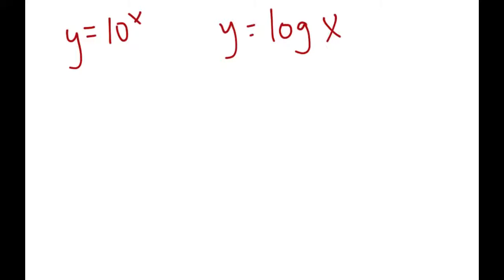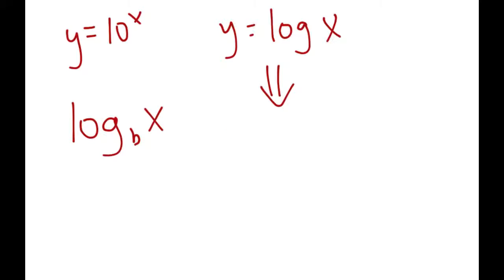Yesterday somebody in class asked: if these two graphs are the same, how come y equals 10 to the x is similar to log x — where's the 10? In the original equation we had 10 to the power of x, and here we have log of just x. The question was where did the 10 go? What happens is logarithms actually have a base number — it would be log of some base to some other number. So the equation y equals log x is actually in reality equal to y equals log base 10 of x, but we don't normally need to write the 10.